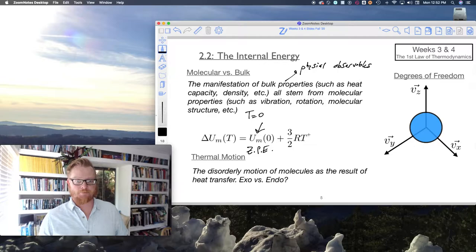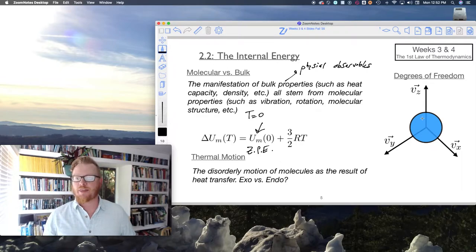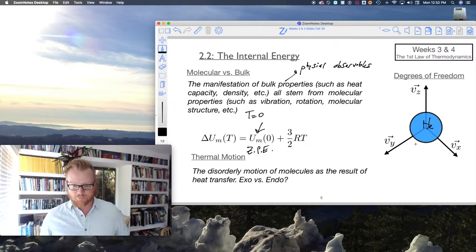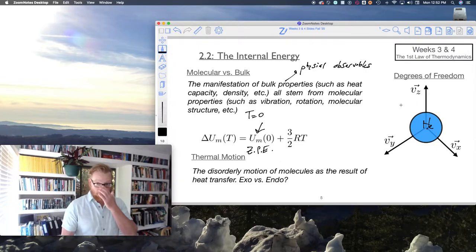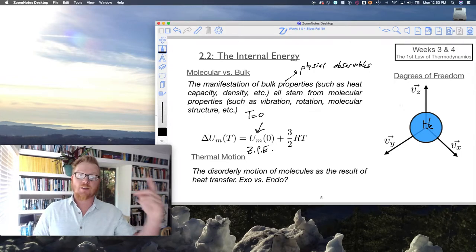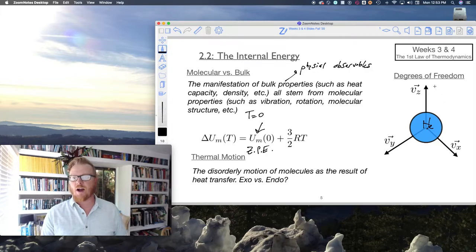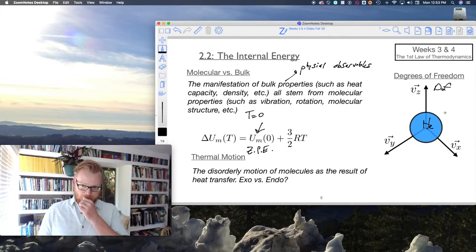Plus three-half RT. Where did this three-half RT come from? Well, recall from our first week in fundamentals, if I think about this noble gas, so suppose something like helium. Helium is free to translate in the X, Y, or Z dimension. I'm going to start referring to these now as the degrees of freedom. And so that doesn't just have to refer to the translations. The rotations, the vibrations, even the electronic transitions. I'm going to call these degrees of freedom. Sometimes I write that D-O-F, degrees of freedom.